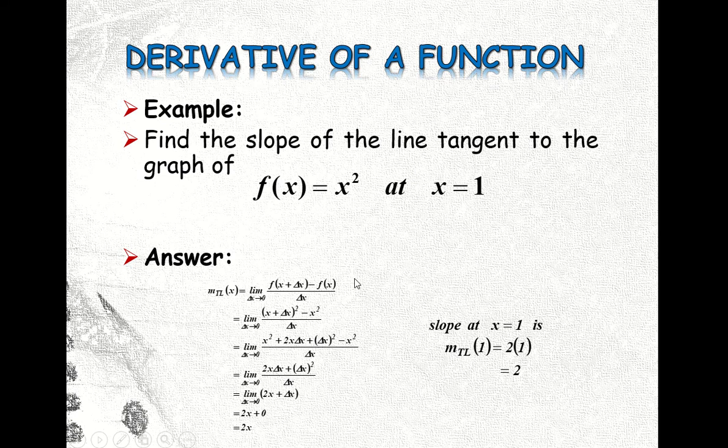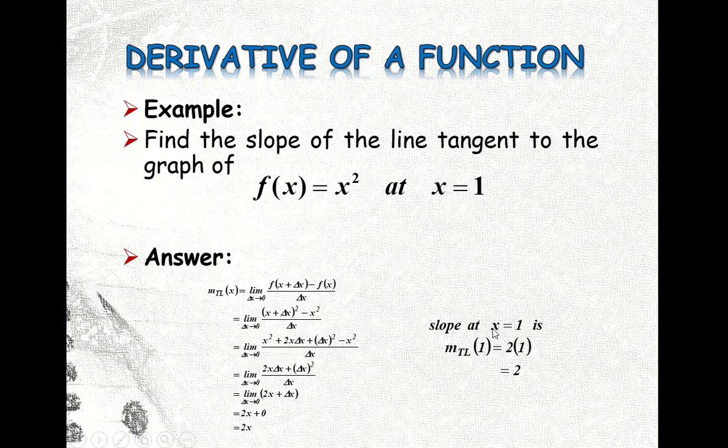So in the second example, that will be in the next video also, we have to do the same process in finding the slope of the tangent line. And then you substitute the value at x equal to, in this example, at x equal to 1, and then you can get the numerical value of the slope of the tangent line.